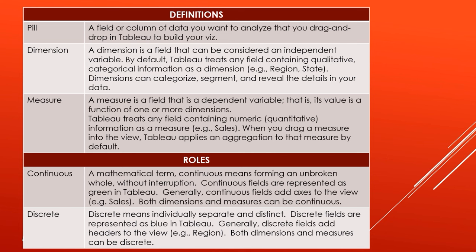Then you have roles for your fields in Tableau — they're either continuous or discrete, and they're color coded. Continuous fields are green and form an unbroken whole without interruption — generally continuous fields add axes to the view, for example sales. Both dimensions and measures can be continuous. Then you have discrete fields, which means individually separate and distinct — they're represented as blue in Tableau. Generally, discrete fields add headers to the view, so you might have a heading for region. Both dimensions and measures can be discrete.